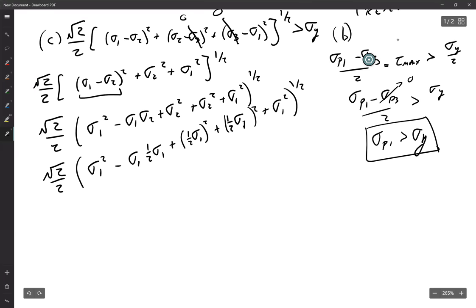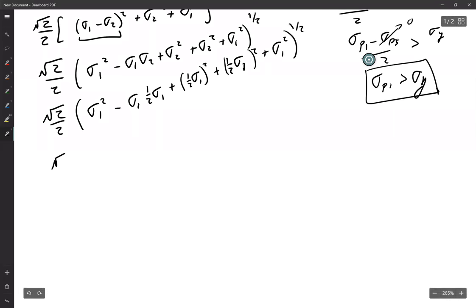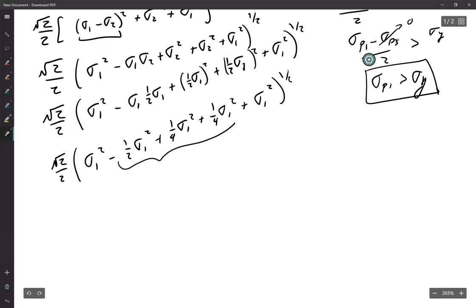Which simplifies to square root of 2 over 2, sigma 1 squared minus one half sigma 1 squared plus 1 fourth sigma 1 squared plus 1 fourth sigma 1 squared plus sigma 1 squared to the one half. These cancel each other out, minus one half plus one quarter plus one quarter.